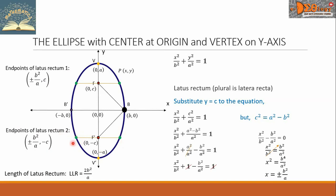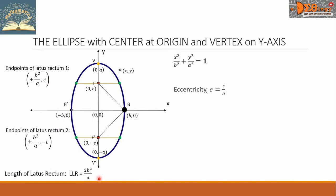The length of each latus rectum, denoted by LLR, is equal to 2b²/a. The eccentricity, denoted by e, equals c over a.